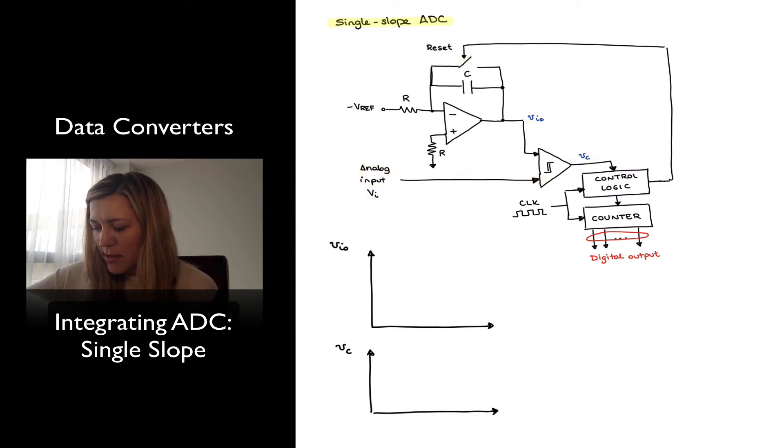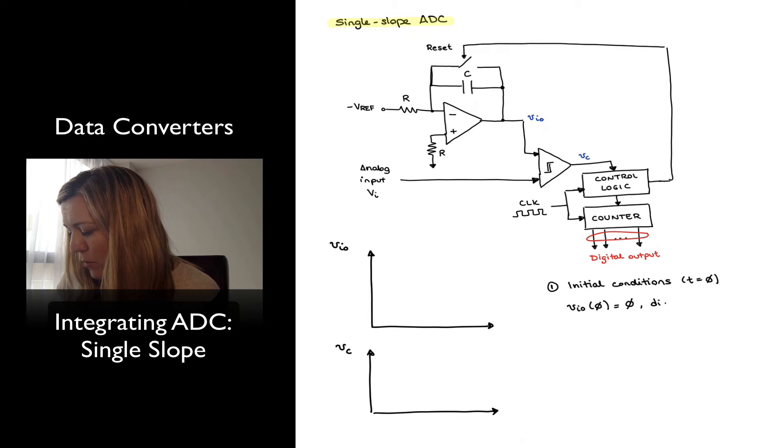So let's take a look at what happens as time goes on. We're going to assume the initial conditions that the integrator is originally reset and the counter is reset. So at time equals zero, I'm going to assume that VI out, which is the output of my integrator, is equal to zero. My counter is equal to zero, which means my digital output, I'm going to refer to it as simply capital D, is set to zero. And the output of my comparator, which I have labeled VC, is originally, since everything is set to zero, I'm going to assume I have a positive value for my analog input voltage V in, and therefore my output of the comparator is set to high.